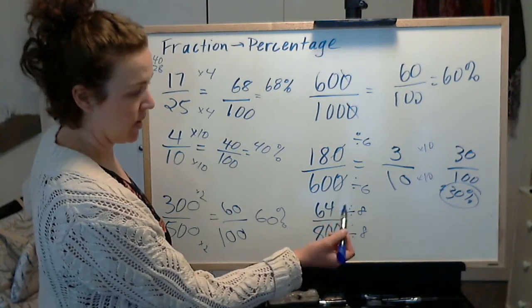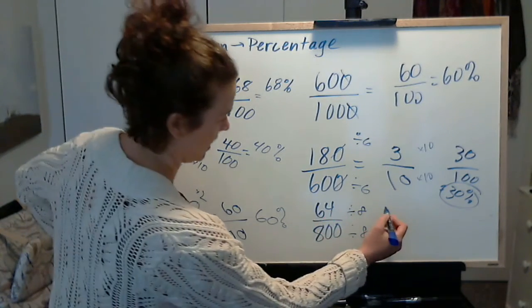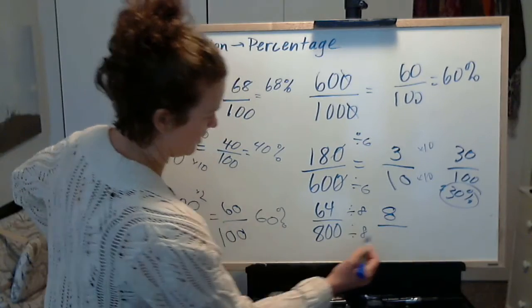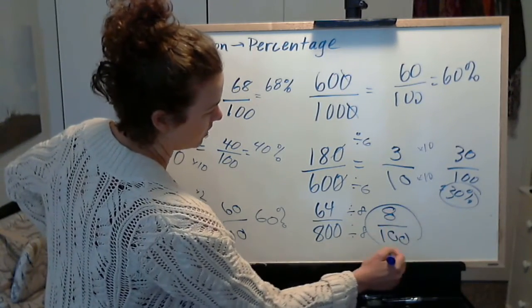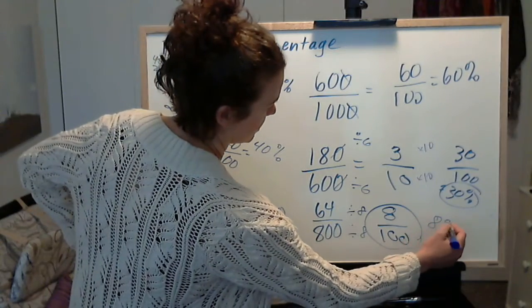64 is 8 squared, so 64 divided by 8 is 8. 800 divided by 8 is 100. And there you go, you have your percentage: 8%.